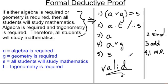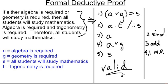And that's formal deductive proof. We can get much more complicated than just algebra, geometry, trigonometry being required, and so on. But the idea is that even something as simple as this can be broken down into a simpler form of symbolic language. Similarly, if you have a more complex argument, you can also do the same sort of proof. And there you have it — a way of actually proving validity using symbols only and some very basic rules of inference.